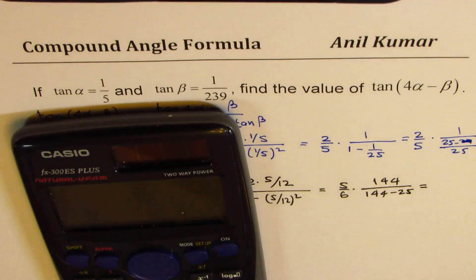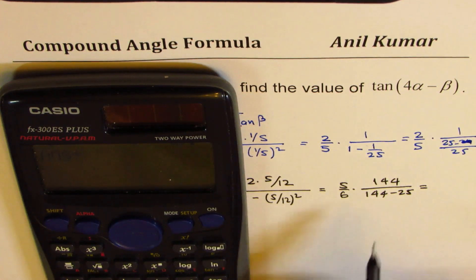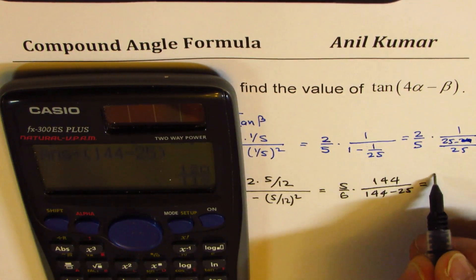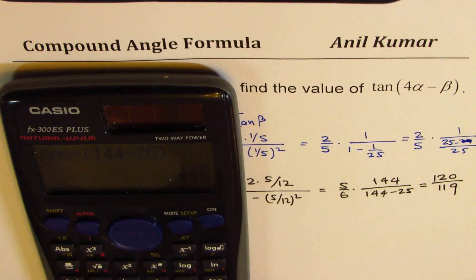Let's calculate this using calculator. So what we have is 5 times 144, which is 720, divided by 6. And we will also divide this by, let me put it in bracket, 144 minus 25. So I used calculator and got this as 120 divided by 119. Perfect.